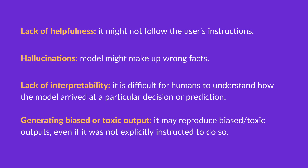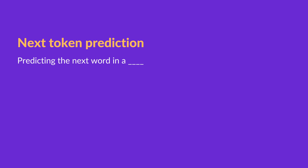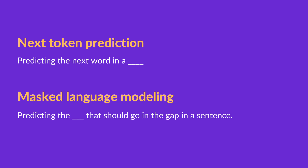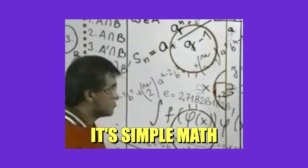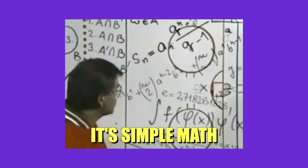This happens due to the data that it was trained on. The language model may reproduce biased or toxic outputs, even if it was not explicitly instructed to do so. These problems occur because big language models are trained on tasks such as next-token prediction or masked language modeling. Although these tasks allow a model to learn the statistical structure of language, they can lead to problems.